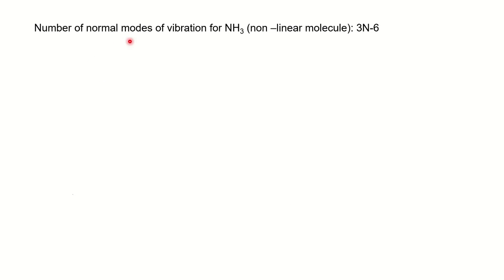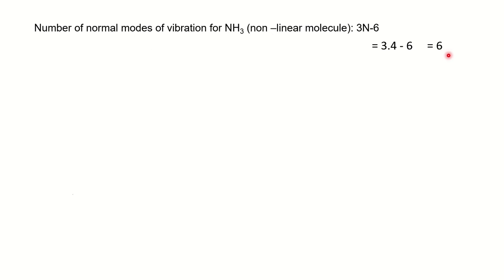Now we will see the number of normal modes for ammonia. Since it is a non-linear molecule, the formula is 3N − 6, where N is the total number of atoms, which is 4. So 3×4 − 6 = 12 − 6 = 6. There are a total of 6 possible modes of vibration for ammonia.